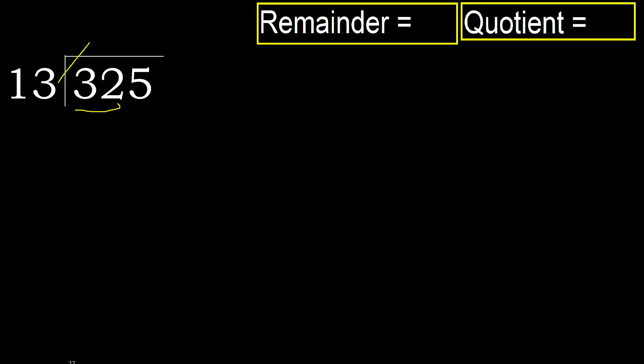13 multiplied by 3 is 39, which is greater. Multiplied by 2 is 26, which is not greater. Ok.